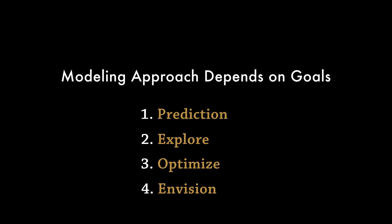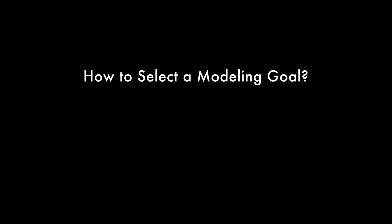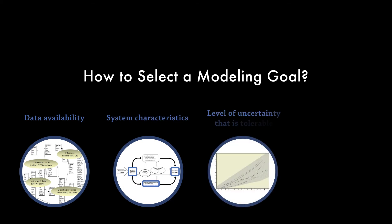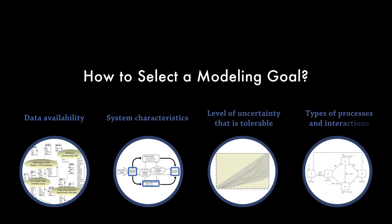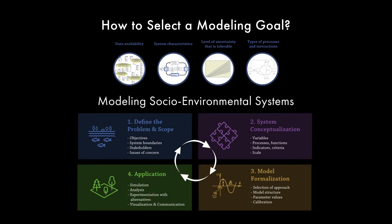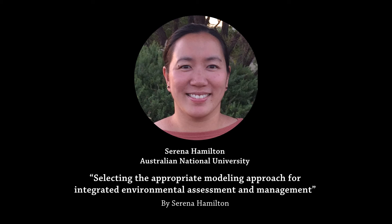For any one of these goals, there are multiple ways to formalize a model, and choosing the best approach will also depend on data availability, characteristics of the system, and the level of certainty requirement. It also is influenced by the types of processes and interactions that are most important to a specific modeling goal. Combining factors like these with the four categories of modeling goals is the basis of a decision tree process that can help you decide what type of model to use, nicely covered in another tutorial in this series by Serena Hamilton and colleagues.